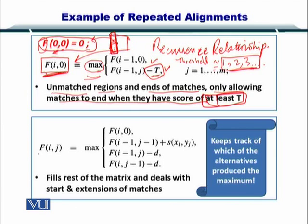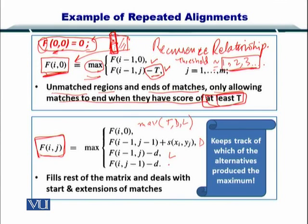Next, you want to compute the rest of the matrix. If you remember in the Needleman-Wunsch and the Smith-Waterman algorithm, you did a max on the diagonal, top, and left elements. Here you can see the diagonal element, the left element, and the top element. This portion comes from here, so you take a maximum from these four values and set a position in the matrix.